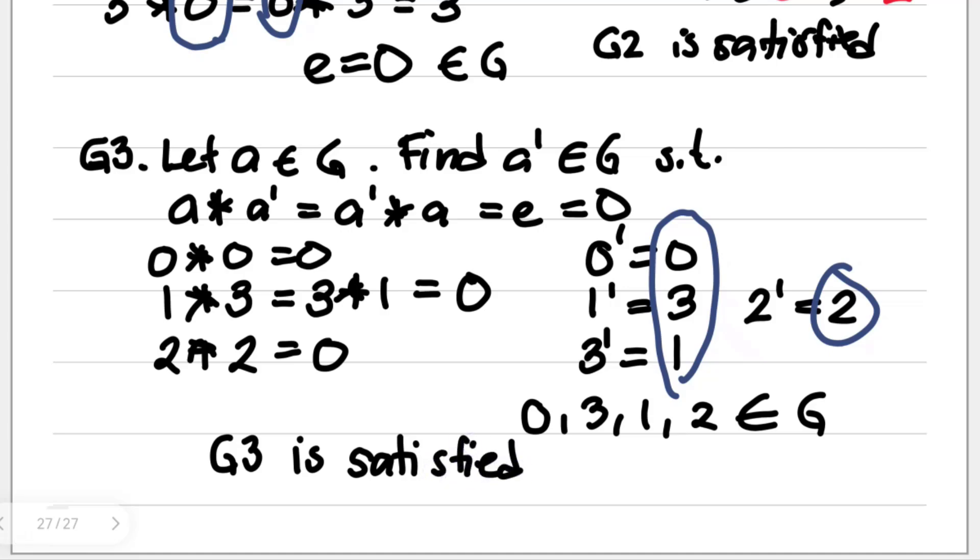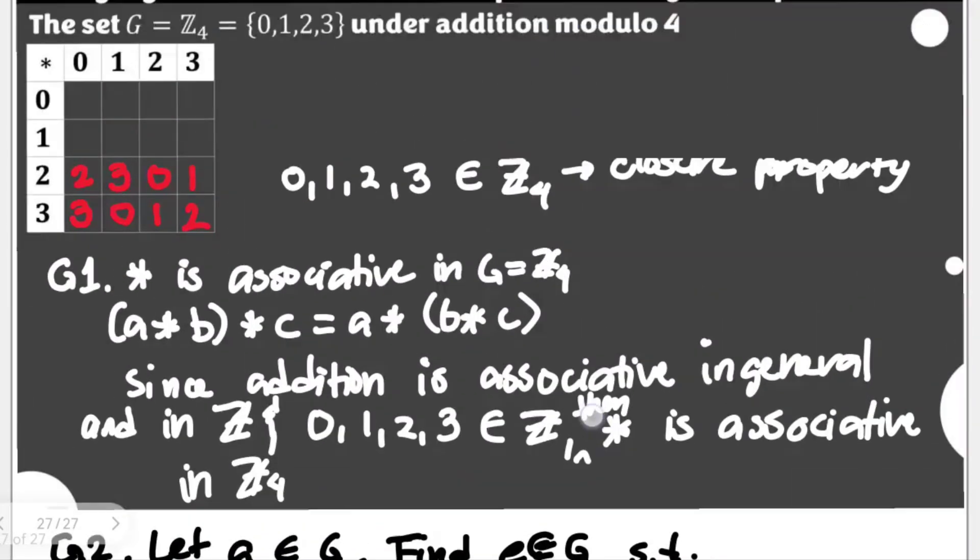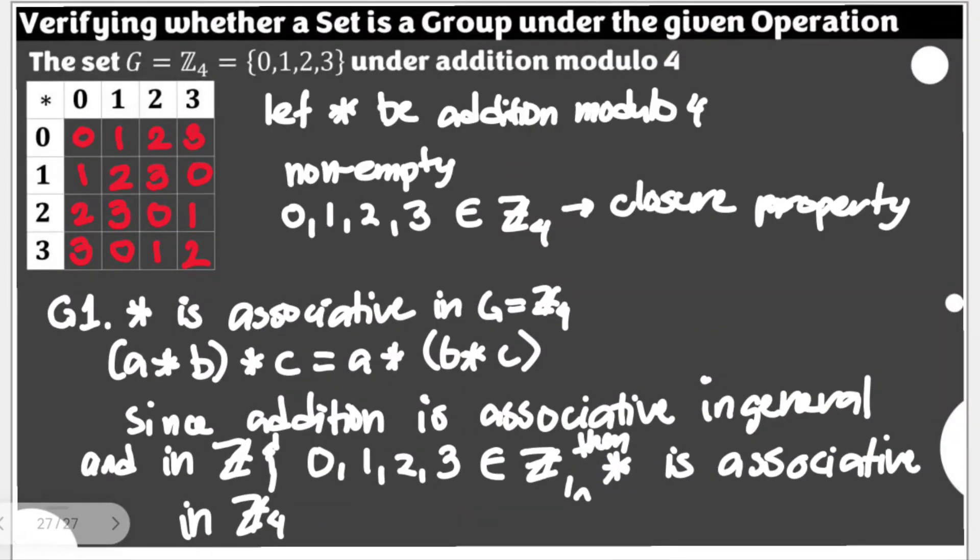With this now, G3 is satisfied, G2 is satisfied, and of course, our associativity earlier is satisfied. We can now say that Z4, which is our G, containing elements 0, 1, 2, and 3, is a group under star. And our star is defined as addition modulo 4. This is the complete verification to say that our set is a group under addition modulo 4. Thank you very much for watching.